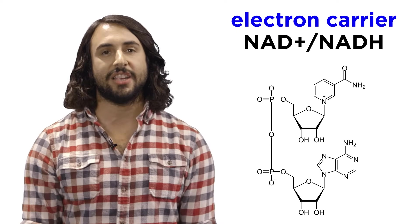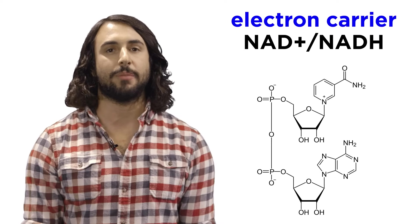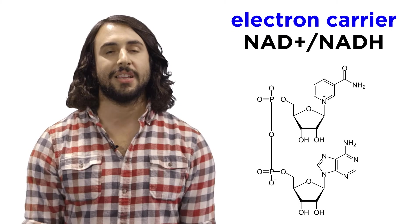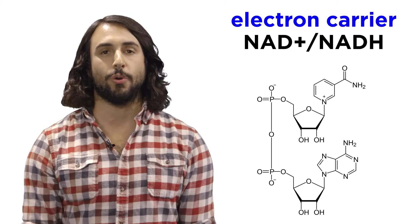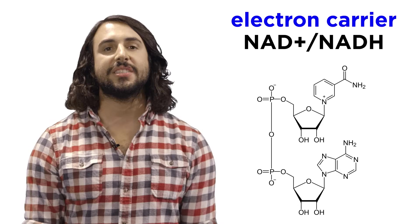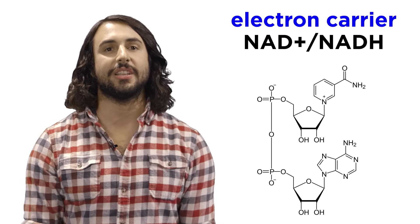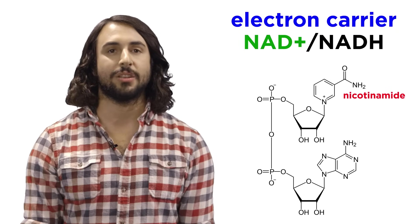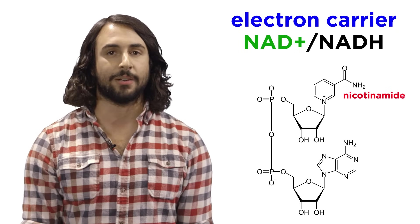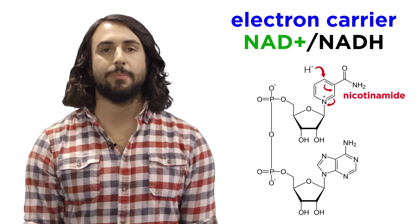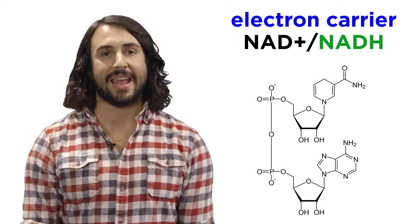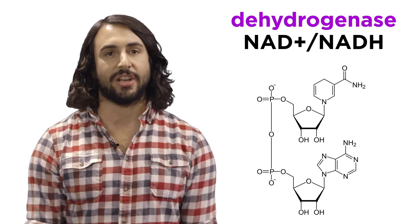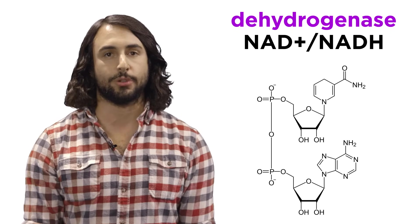The electron exchanges that occur throughout these metabolic pathways utilize the electron carrier NAD+, and its other form, NADH. This is a dinucleotide with an interesting base, nicotinamide, that can exist either as NAD+, with a positively charged nitrogen atom, or, if reduced, it can become NADH. This transfer, facilitated by an enzyme called dehydrogenase, helps catalyze the breakdown of glucose.